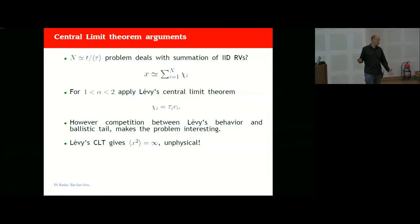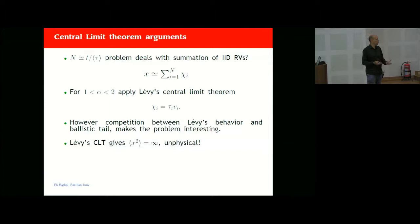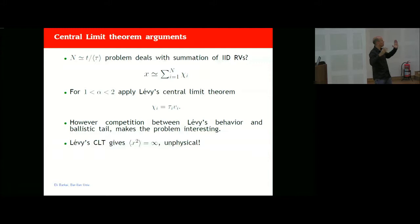There is a problem with the Levy central limit theorem from a physical point of view: it would predict a fat-tailed distribution, and the mean square displacement x² would naively be infinity. But the velocity has to cut this off, meaning that in the tail there is something else beyond the Levy description — and that is what I want to discuss. Levy flights are often considered not physical.